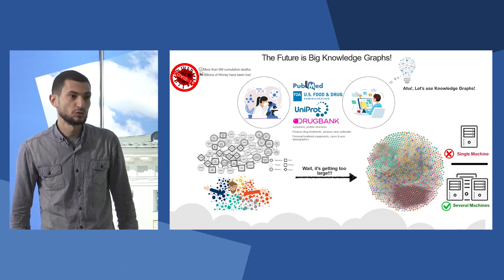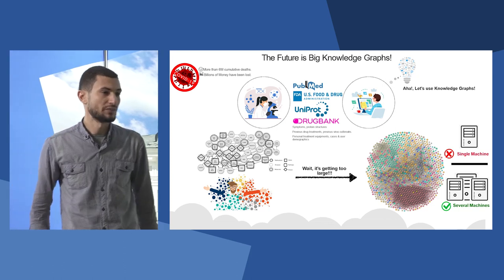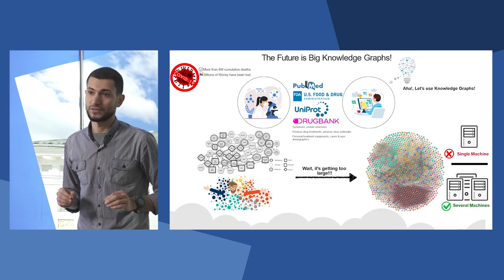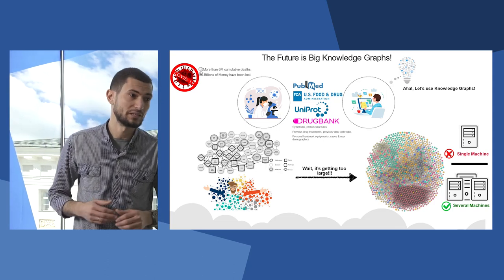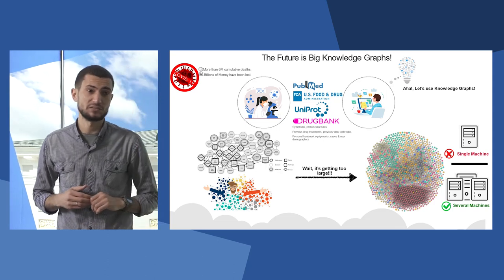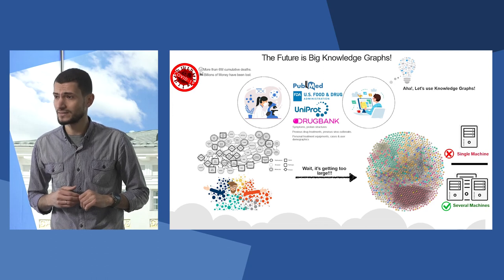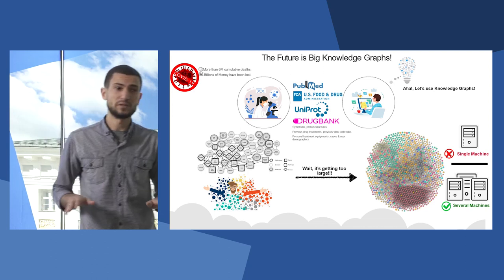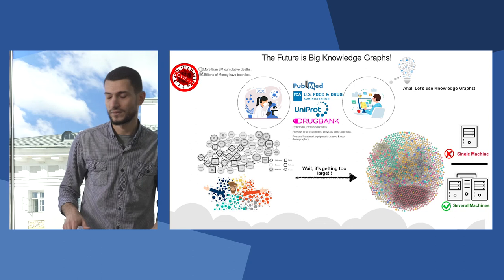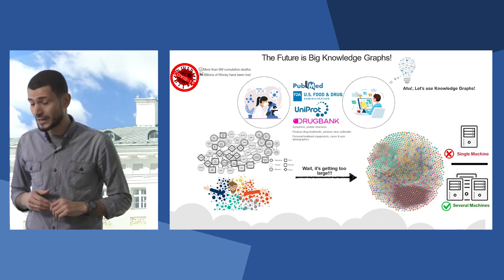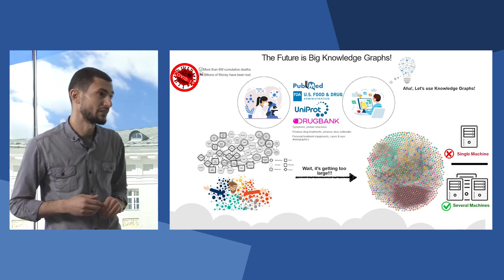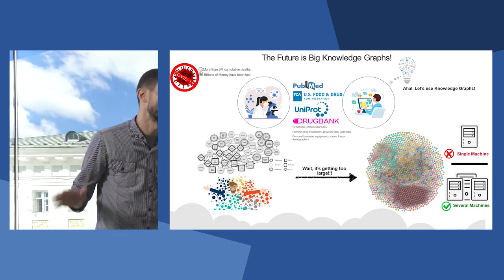Hello. Two years ago, the 1.7 billion on Earth wouldn't expect the COVID-19 pandemic that came up with a lot of several sad consequences. Indeed, several million people already lost their lives, unfortunately. And no one can deny the huge losses in economy that happened all over the world.